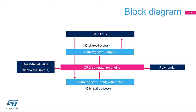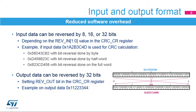It contains a single 32-bit register, which is used for both writing and reading by either the CPU or DMA controller. The initial value, input-output bit reversal, and polynomial coefficients are configured by the software during the initialization phase before starting a new CRC calculation. The CRC computation engine will hold the result of any previous CRC calculation, which then becomes the initial value for the next calculation, thus allowing a new CRC computation of a data block. The input and output format is fully configurable to reduce the software overhead.